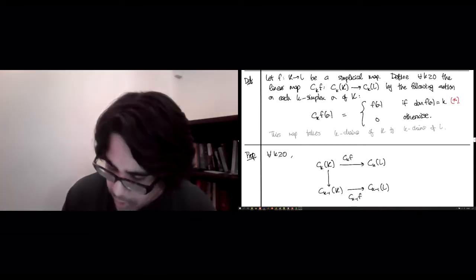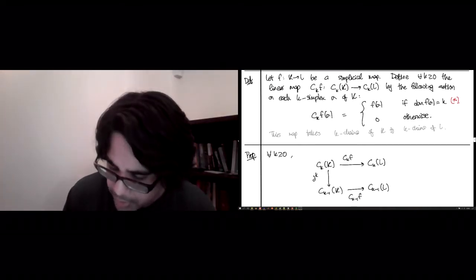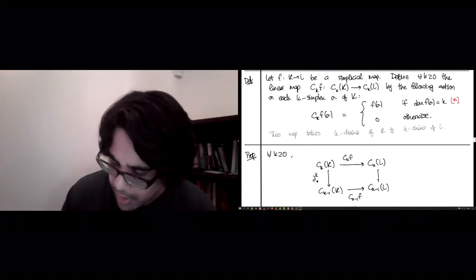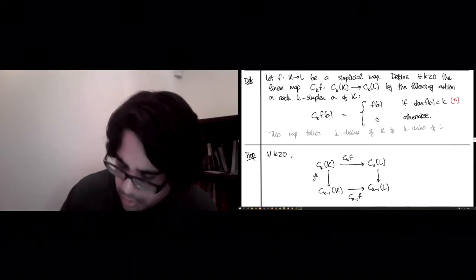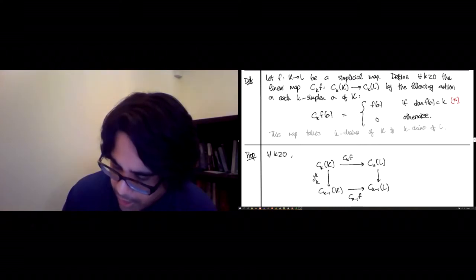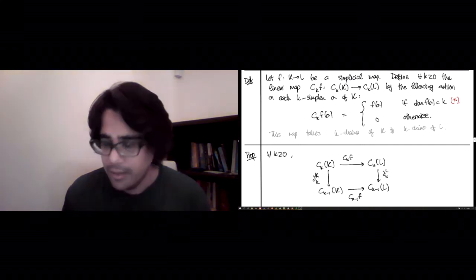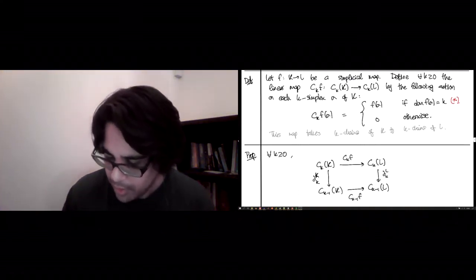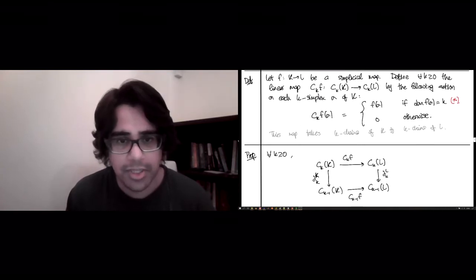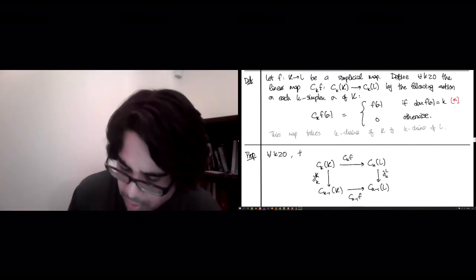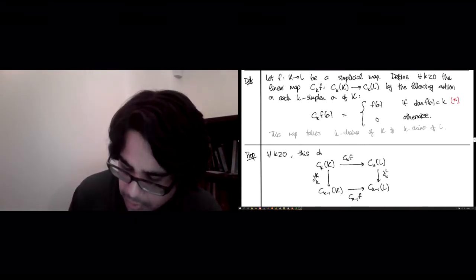Degree k-1, it sends the k-1 chains of K to the k-1 chains of L using the same exact formula. And here on the left, you have the boundary operator of the chain complex K. And I guess this is in degree little k. And on the right, you have the boundary operator of the chain complex L. And for every possible dimension k bigger than 0, this diagram commutes.